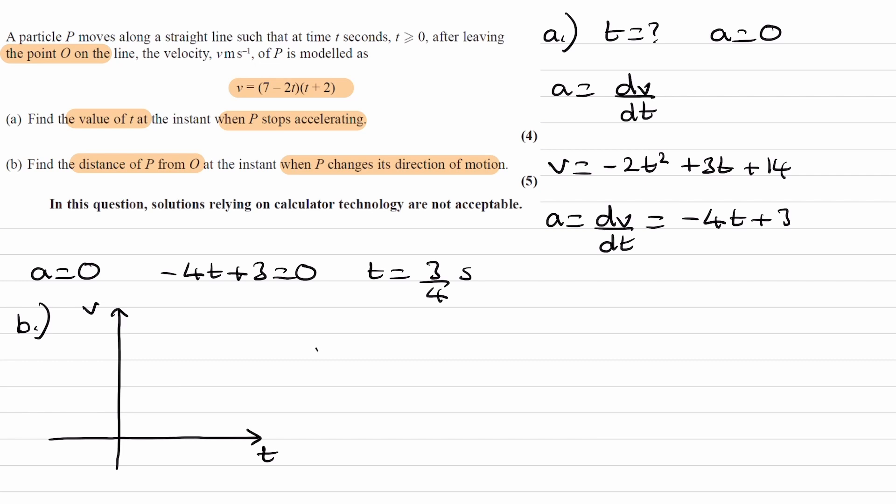Our equation for velocity is 7 minus 2t times t plus 2. I'll set this equal to 0, so we can work out what the roots are of this equation. Where this graph crosses the time axis, that would be when 7 minus 2t is 0, and when t plus 2 is 0. This gives t is equal to 7 over 2, and this gives t is equal to minus 2.